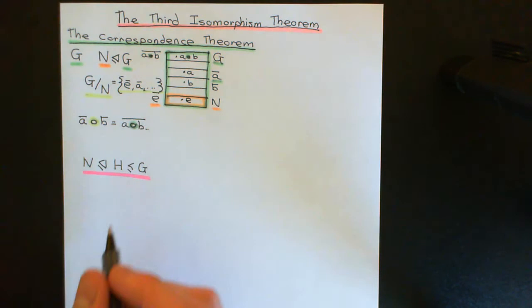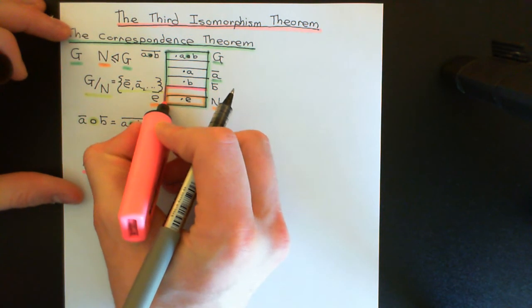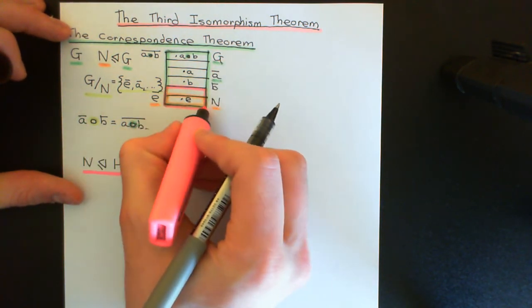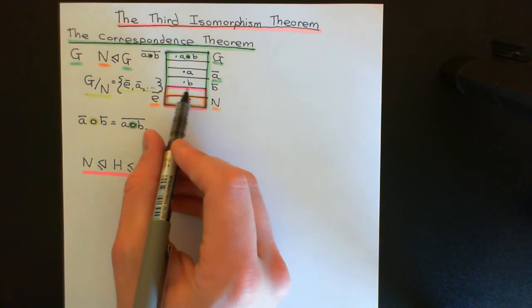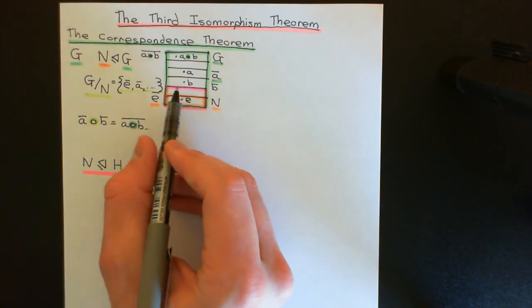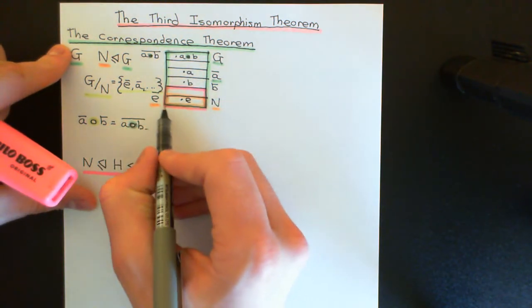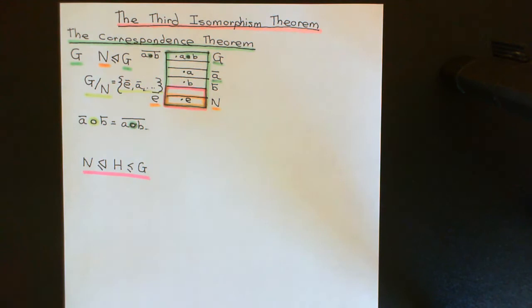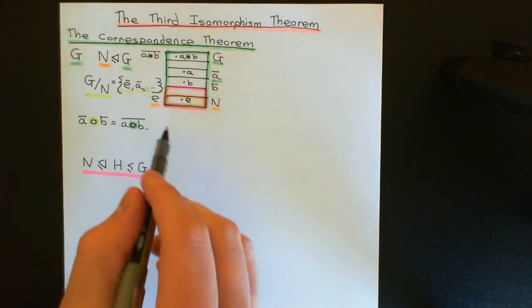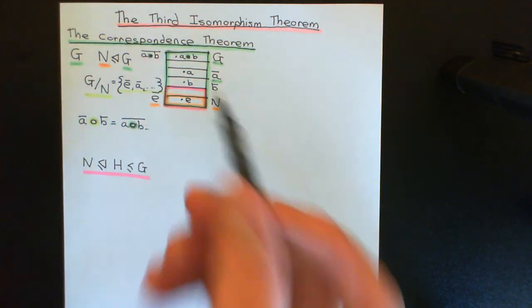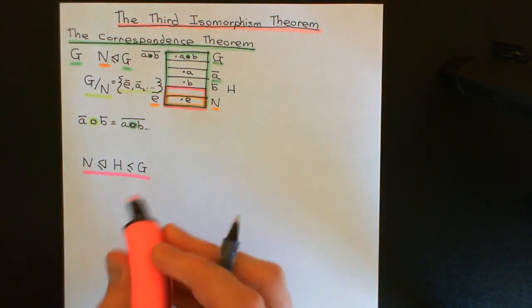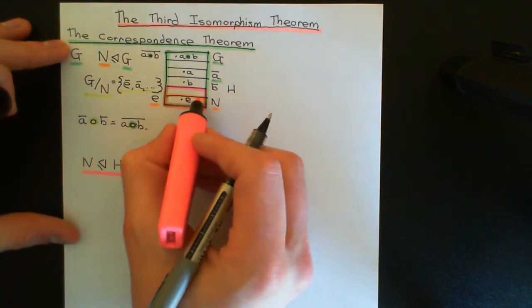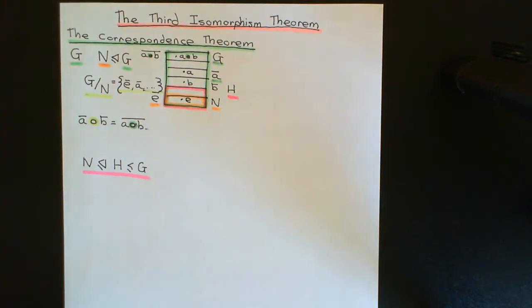In terms of the picture, I'm looking at a subgroup of G that contains N — maybe something like this pink region, a subset of G that completely contains N and is a subgroup of G. You might wonder why it contains cosets perfectly; the reason is that H, being a subgroup, will be partitioned into an exact number of cosets of N. It could be that H equals N — the theorem still works.